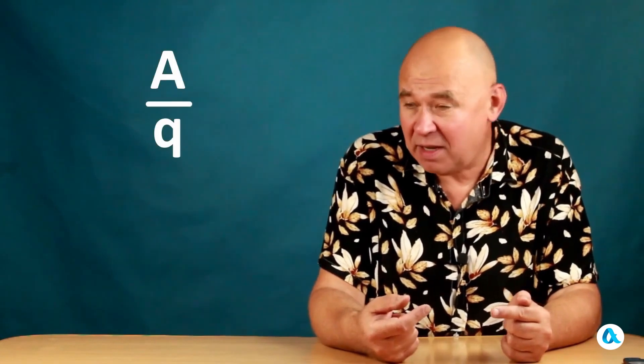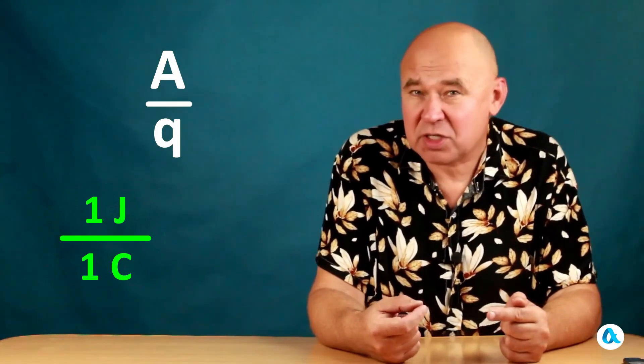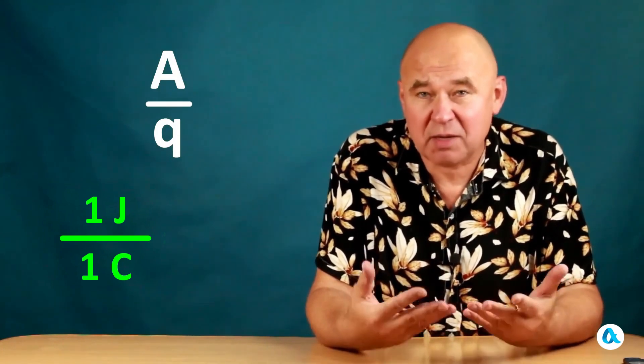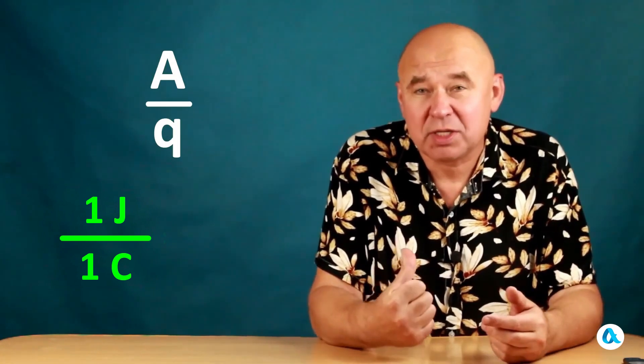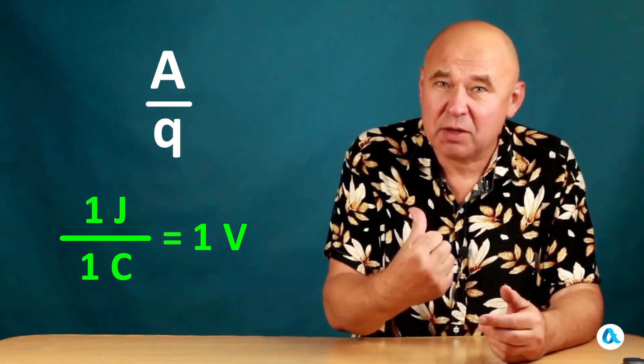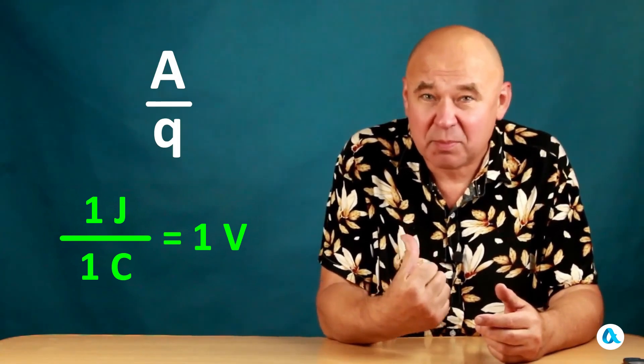Now we need to take the next step and say our test charge itself can be larger or smaller. Then the work of moving it from one point in space to another will be proportionally larger or smaller. Therefore, it is natural to consider the ratio of this work to the magnitude of the test charge, A divided by Q. In the SI system, work is measured in joules, charge in coulombs, and the corresponding quantity we have just introduced will be measured in joules per coulomb. But this quantity has a special name: 1 volt. This is exactly where volts come into play.